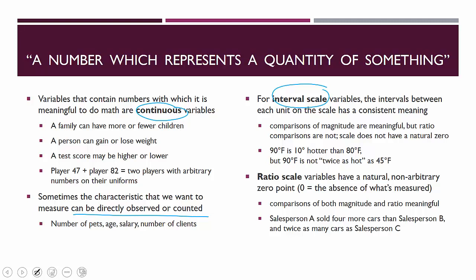The ratio comparison doesn't make sense for interval scales, but the magnitude comparison does. A ratio scale variable is named this way because ratio comparisons do make sense — what makes that work is that the zero point is a natural zero and it represents the absence of whatever is being measured. Going back to the temperature example, heat is a measure of the motion of molecules. On the Kelvin scale, zero is when the molecules stop moving — it's the absence of what's being measured. So on the Kelvin scale, 90 degrees Kelvin is actually twice as hot as 45 degrees Kelvin.